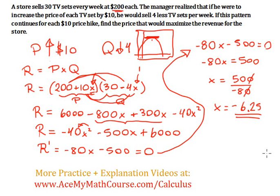And what does that mean? Well, we want to find the price that would maximize the revenue for the store. And remember that the price is this: it's 200 plus 10 times the value of x. Now, this is the value of x that makes for the maximum revenue.